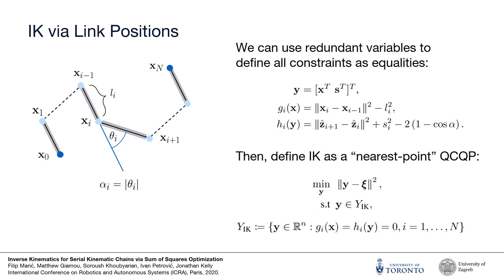We then proceed and transform the inequality constraints to equalities by introducing redundant variables s, resulting in a higher dimensional decision variable y. This allows us to define a nearest point quadratically constrained quadratic program, in which the squared distance from a random decision variable is used to induce a unique solution to the problem, even when there are redundant degrees of freedom.